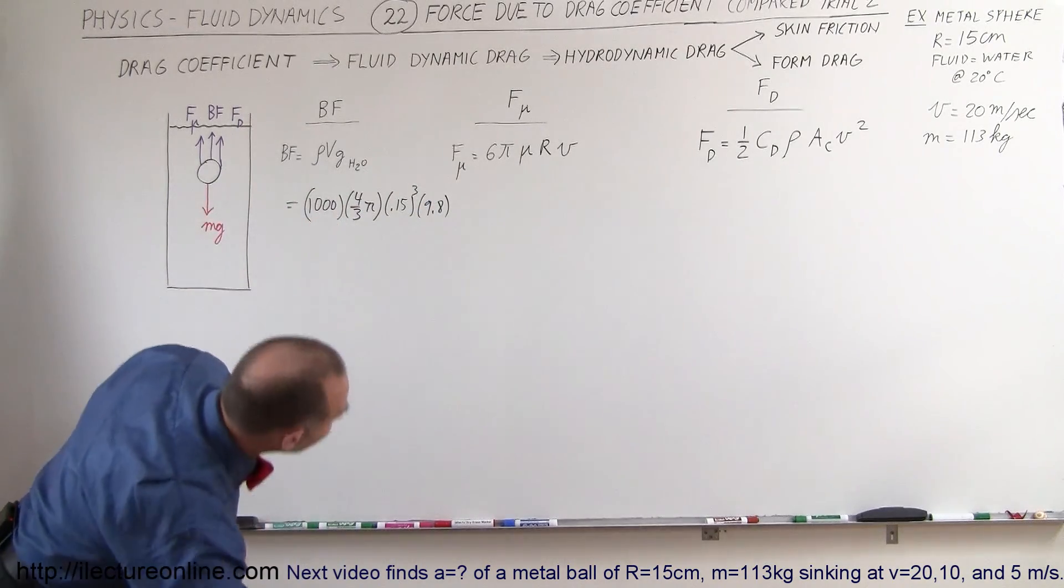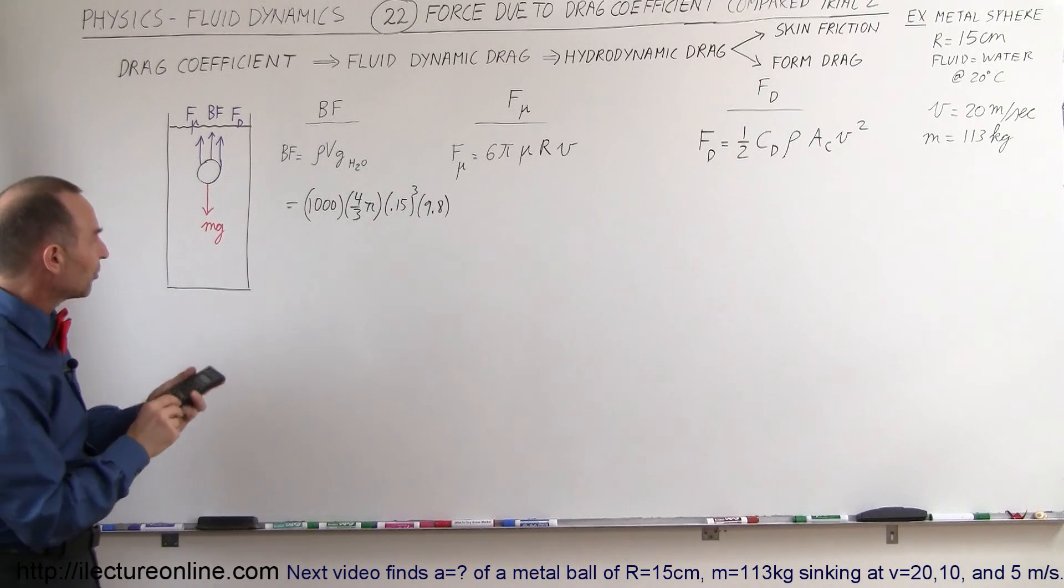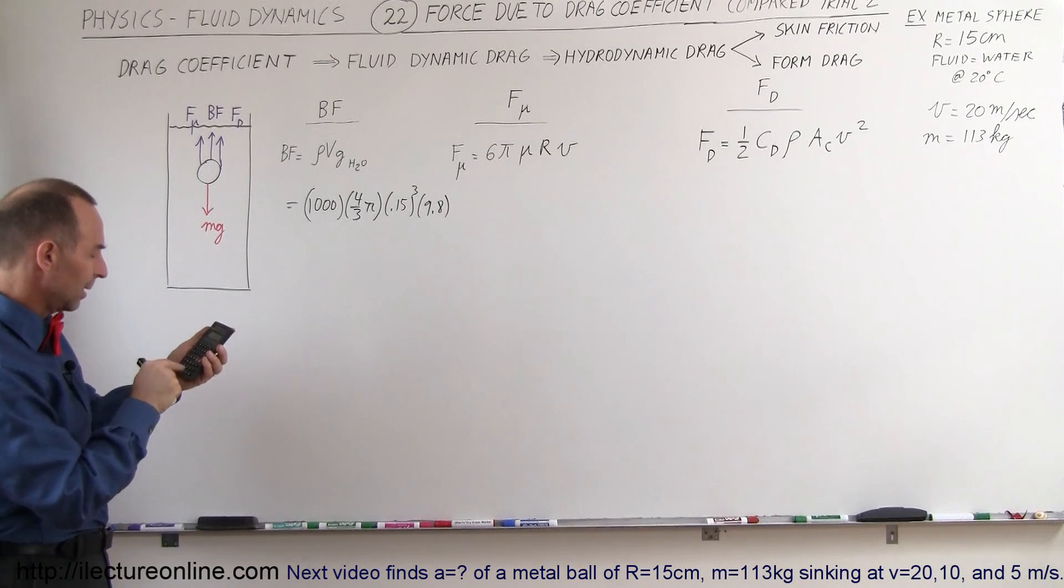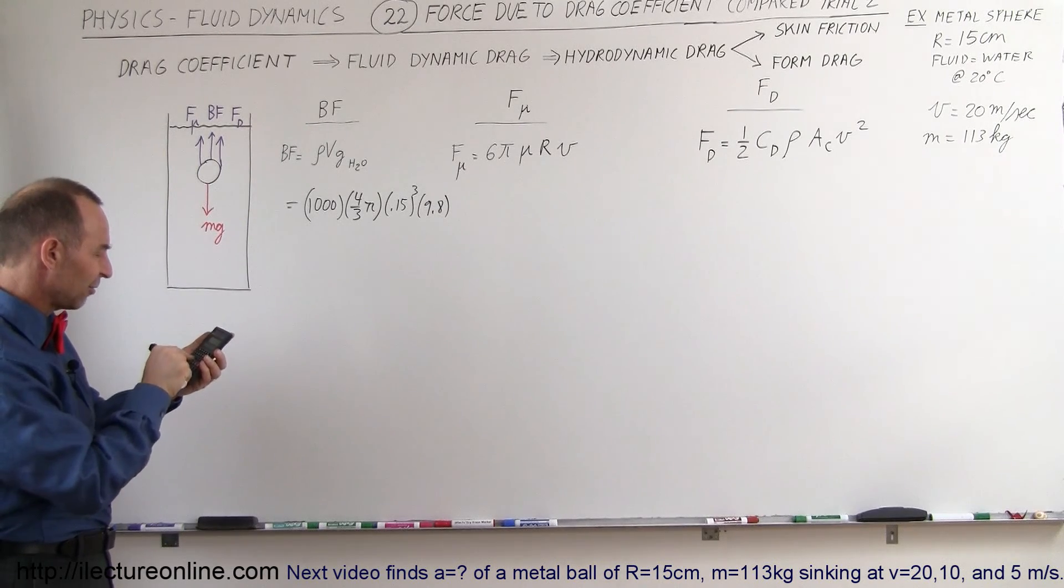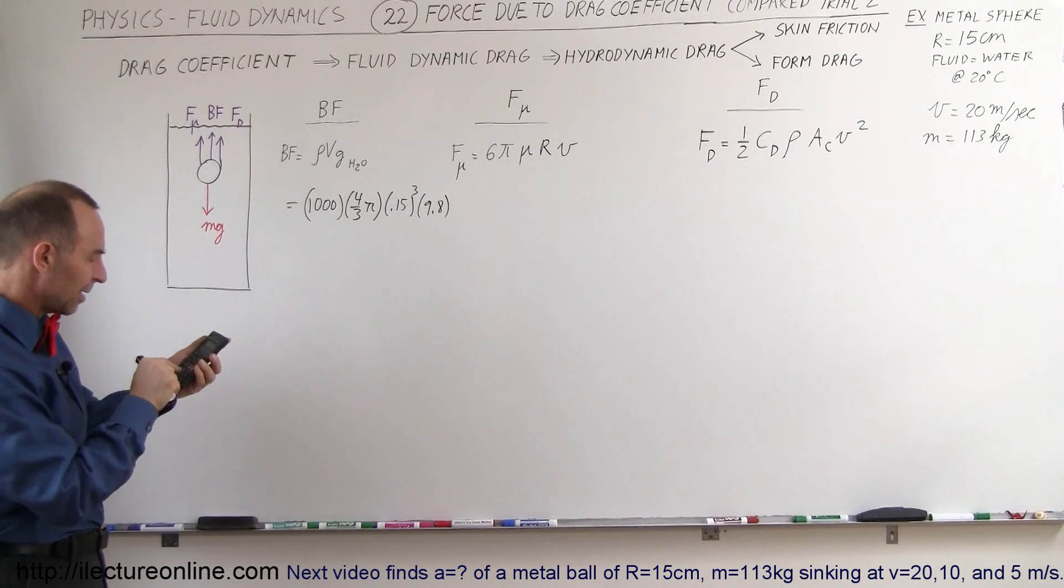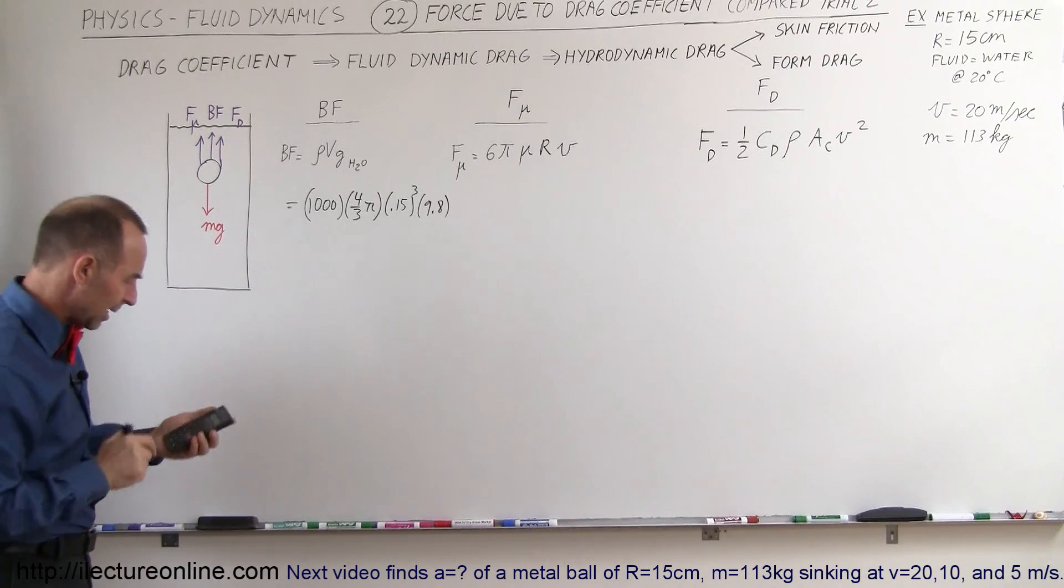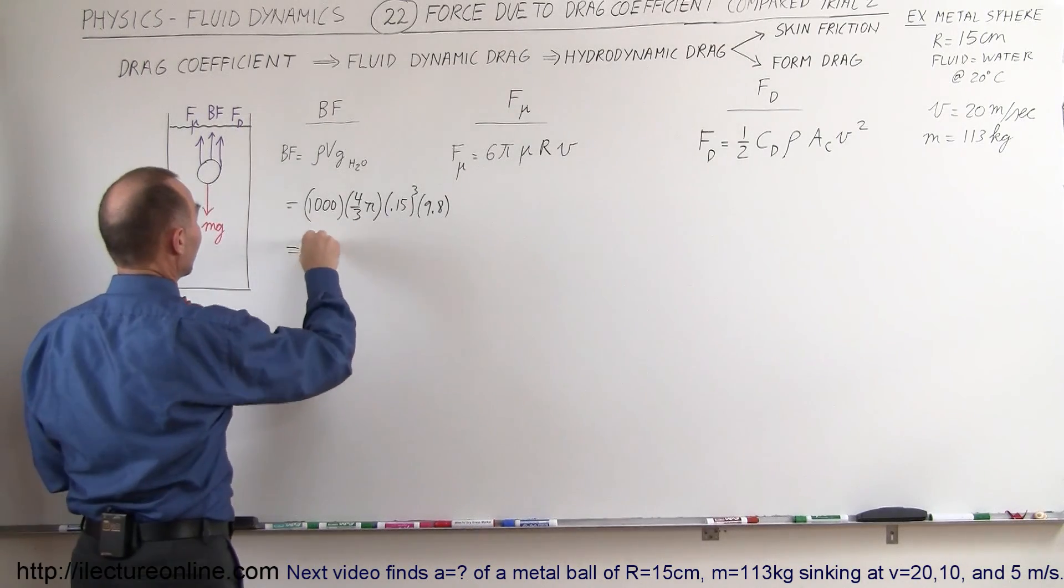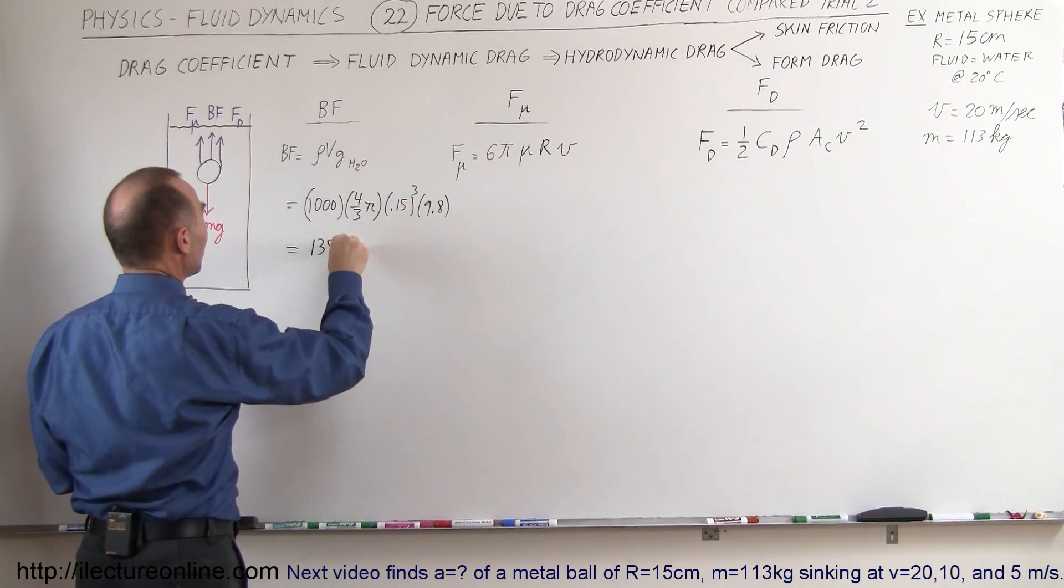So it will be 4000 divided by 3 times π times 0.15 quantity cubed, and then times 9.8, and that's 138 Newtons. So 138 Newtons is the buoyancy force.